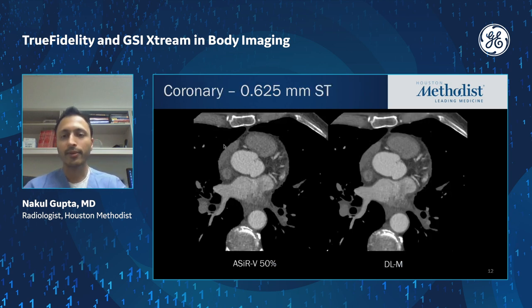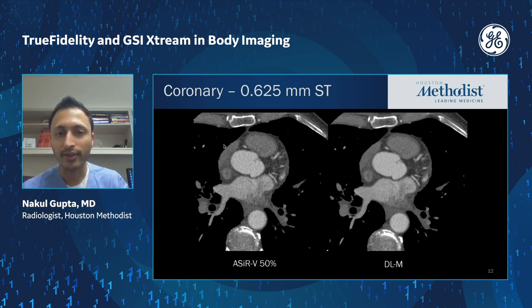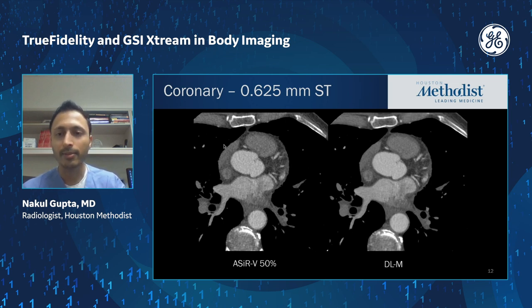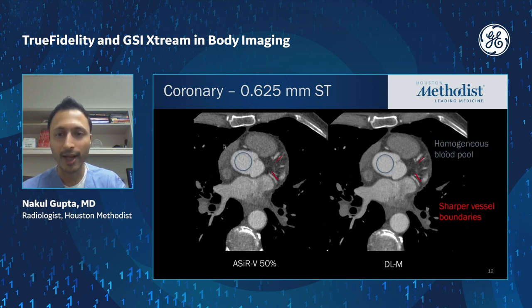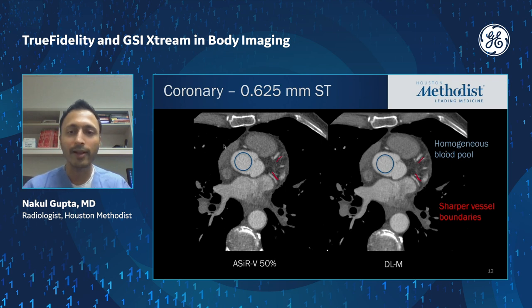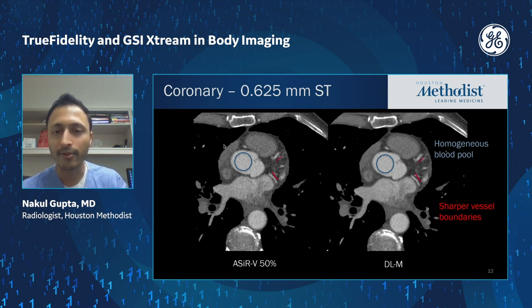Coronary CTA was actually one of the first places we implemented deep learning reconstruction. On this 0.625 millimeter slice thickness scan, the ACERV image at 50% strength versus the deep learning medium strength shows slightly sharper vessel boundaries while at the same time having a more homogeneous blood pool. We've applied this now across the board to all CTA exams for this reason.